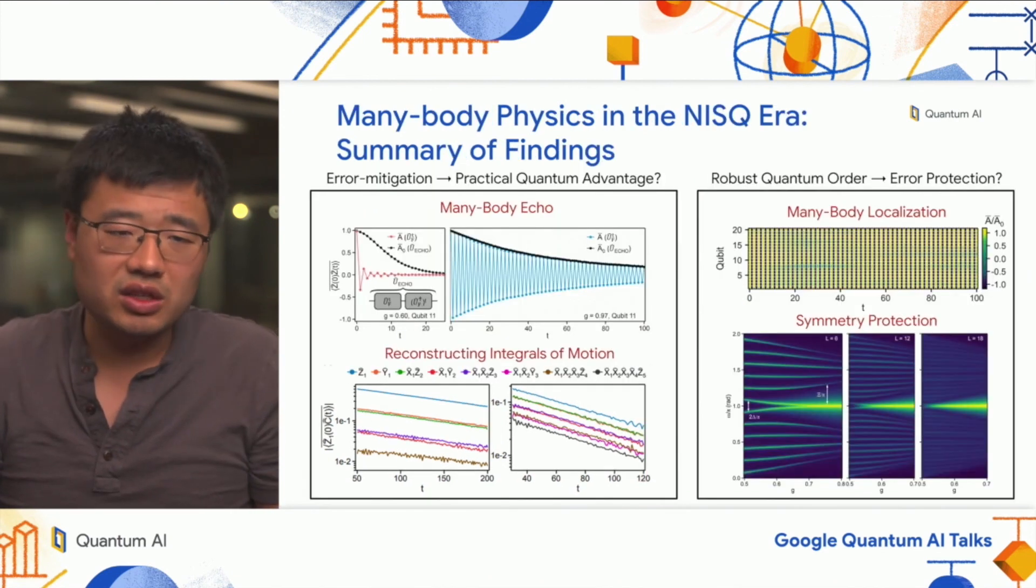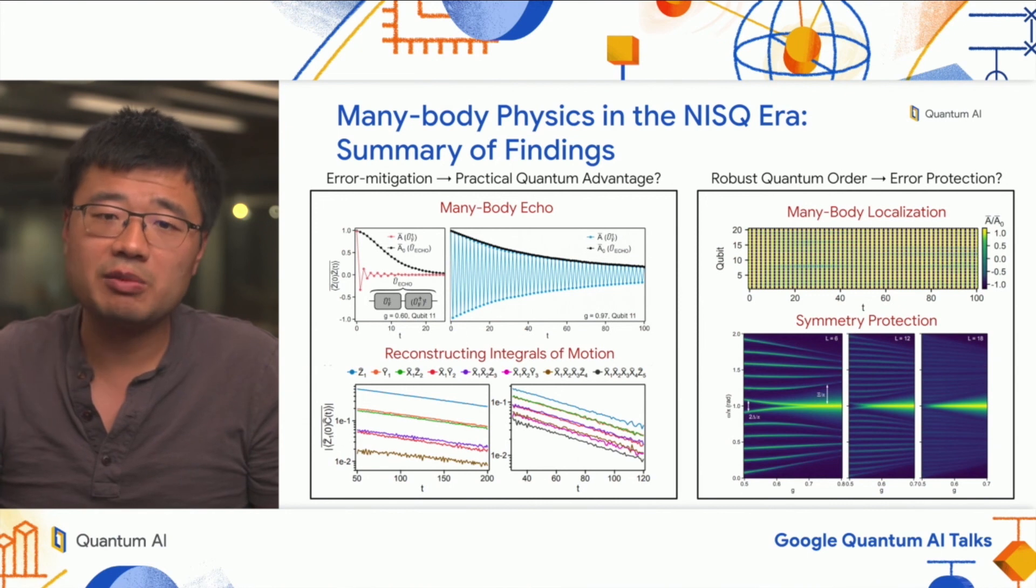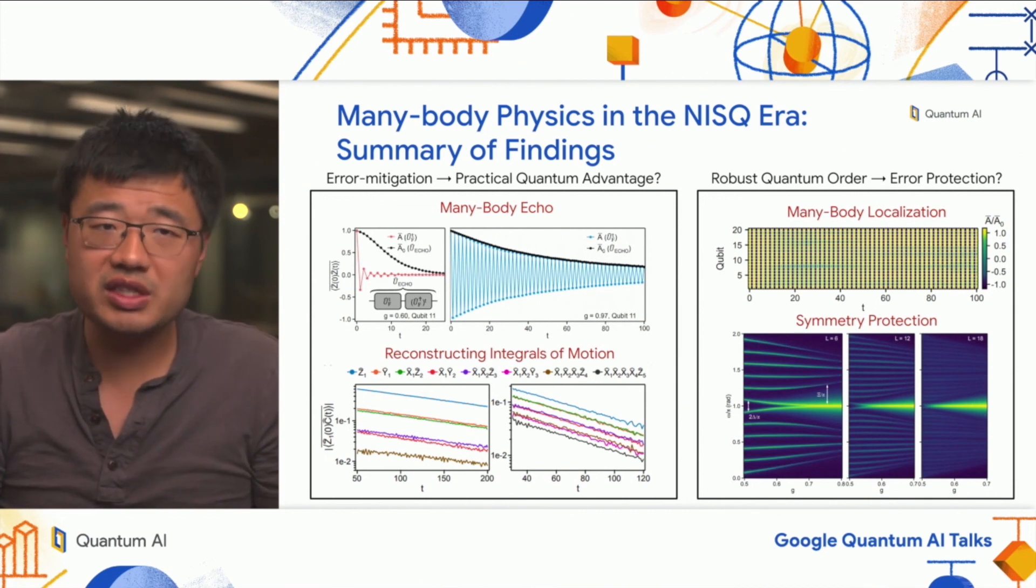Let me conclude by saying two important things we learned from this experiment and related experiments on time crystals. One is that error mitigation is really powerful in the NISQ era. There are strategies like how to reconstruct integrals of motion or the many-body echo protocol we exploited in OTOC or the DTC experiments. These allow you to infer the ideal behavior of the system to great accuracy up to quite a bit of time evolution without needing full error correction. This is very useful.